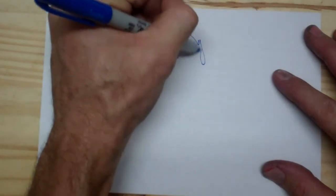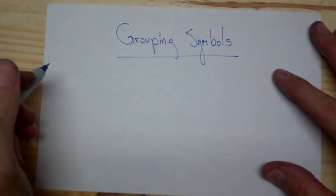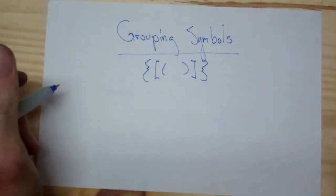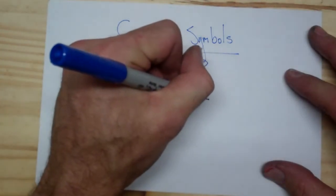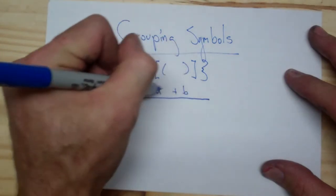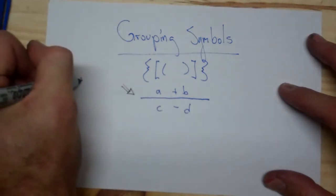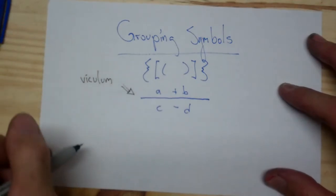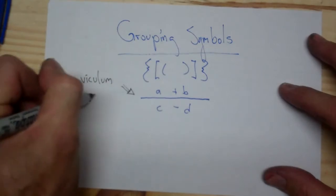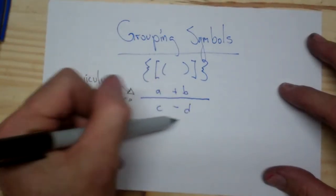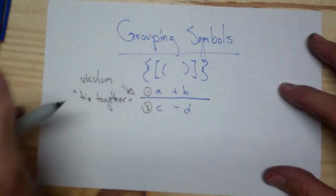So what are the different types of grouping symbols? A long time ago we used to think of grouping symbols as just parentheses — that's not true. Grouping symbols actually covers a whole bunch of things: parentheses, brackets, and braces depending on how many levels you have. Another type of grouping symbol we see a lot is the fraction bar. There's actually a Latin word for it — it's called the vinculum — which literally means to tie together, which is sort of the definition of a grouping symbol. It ties the numerator together and the denominator together into two groups.